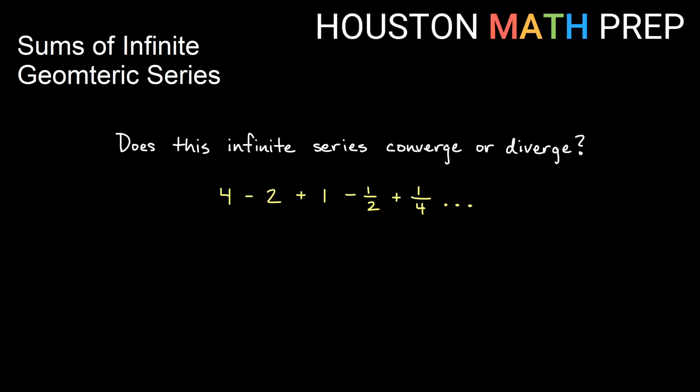Houston Math Prep here talking about sums of infinite geometric series. Here I've got a geometric series 4 minus 2 plus 1 minus a half plus a fourth. The question is does this infinite series converge or diverge? If I add forever, does it add up closer and closer to some real number, saying it converges, or does it add without bound, not arriving at a real number, in which case we say it diverges? We're going to talk about how to decide when you have the sum of a geometric series.